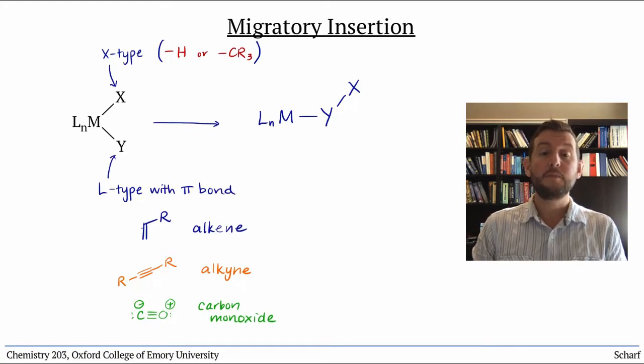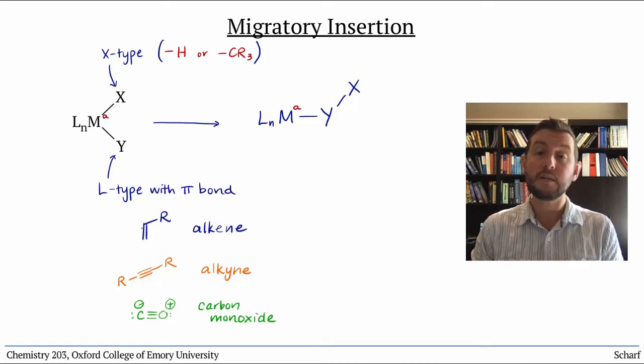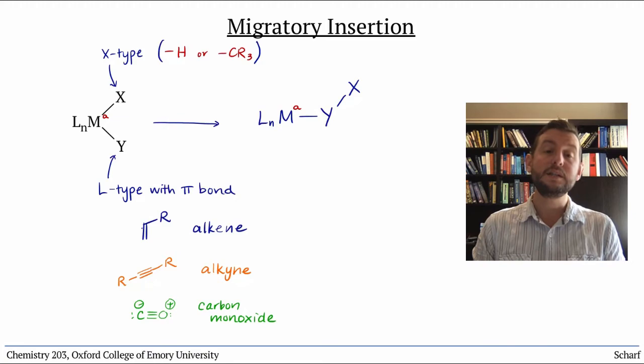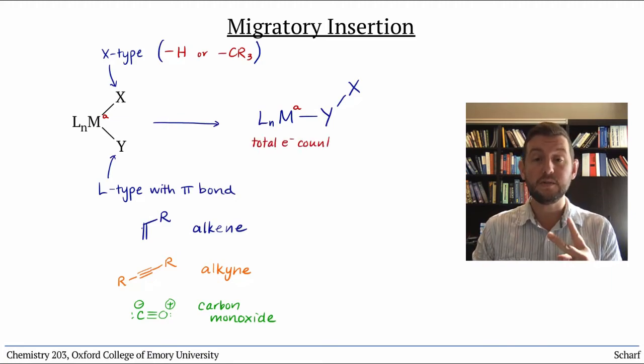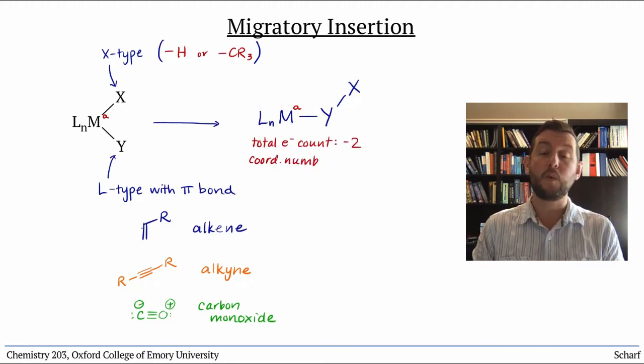Overall, migratory insertion doesn't change the oxidation state of the metal ion, but it does reduce the total electron count by 2 and the coordination number by 1.